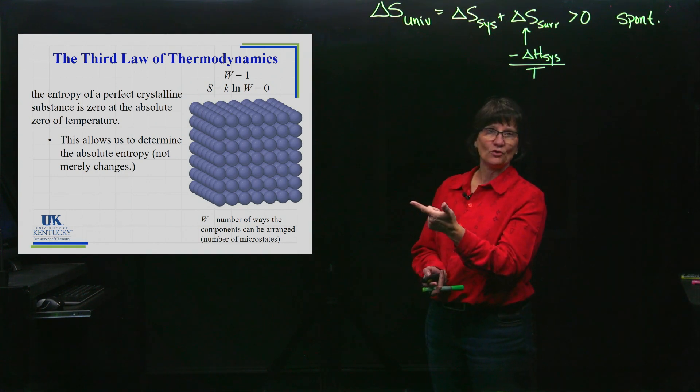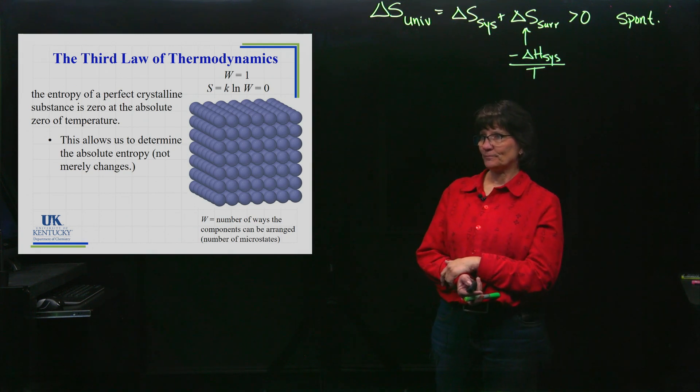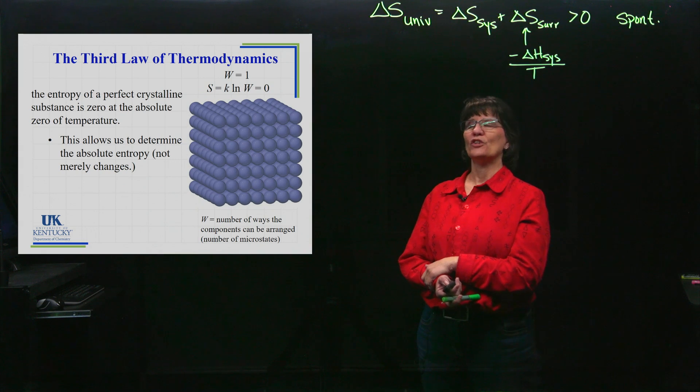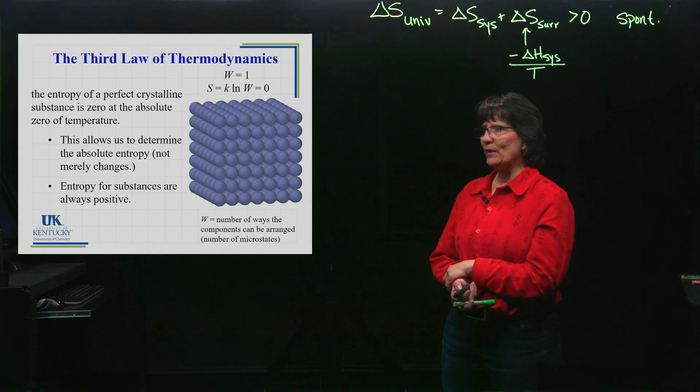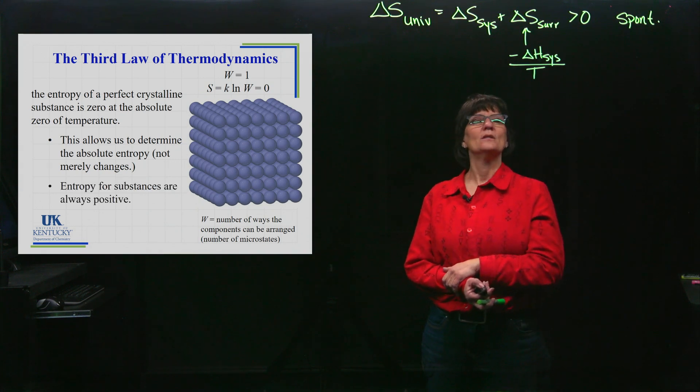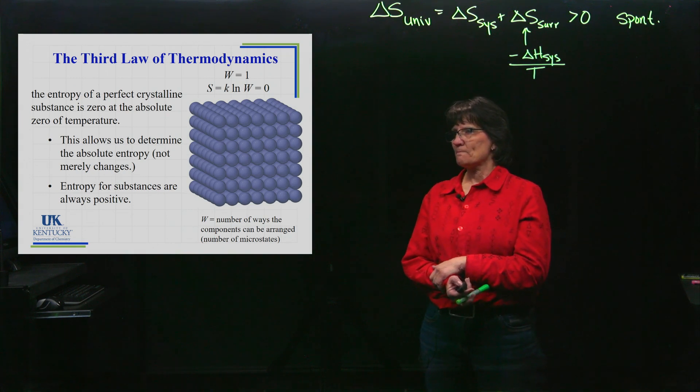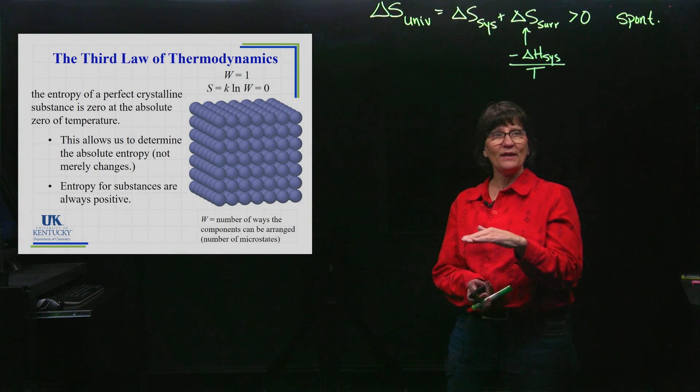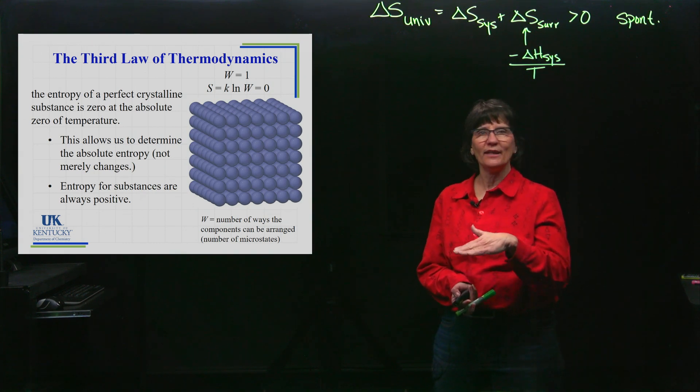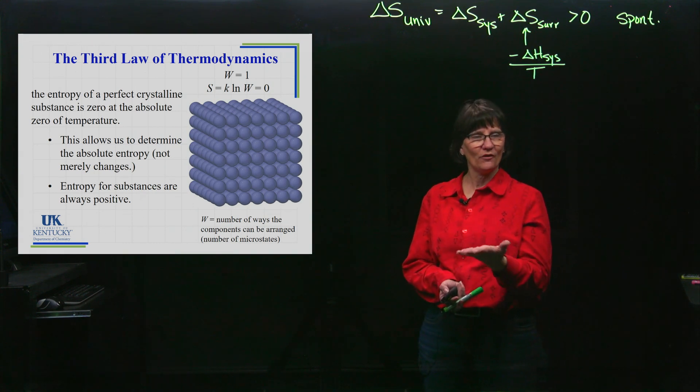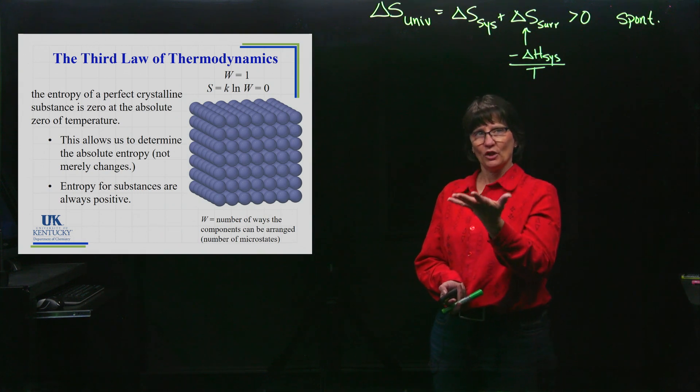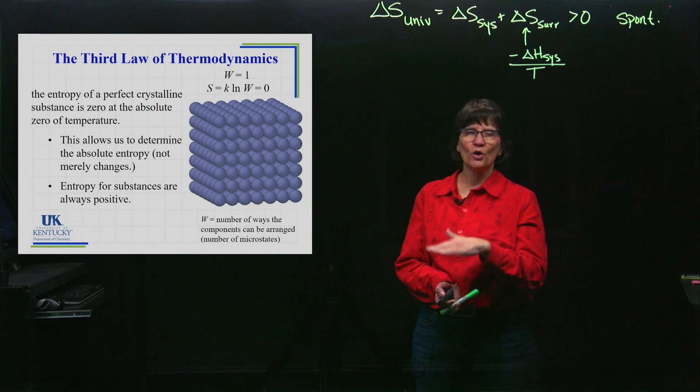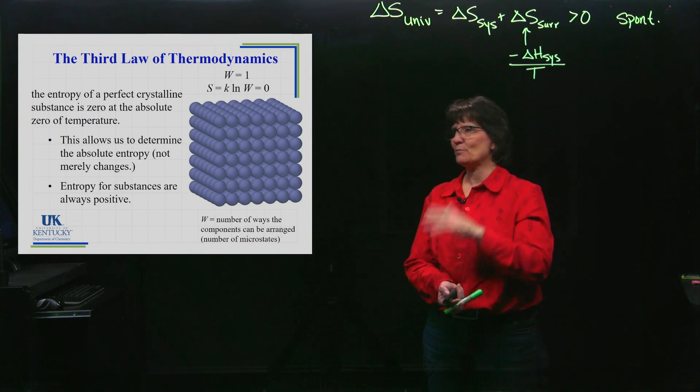Because you have a starting point of what zero is, you can determine values for entropy for different substances and at different temperatures. You don't have to always talk in the world of deltas with the change going on, like we had to do with ΔH's.